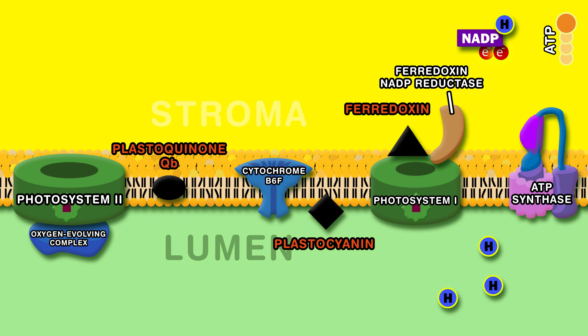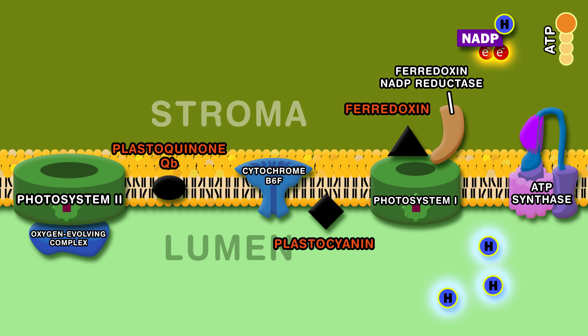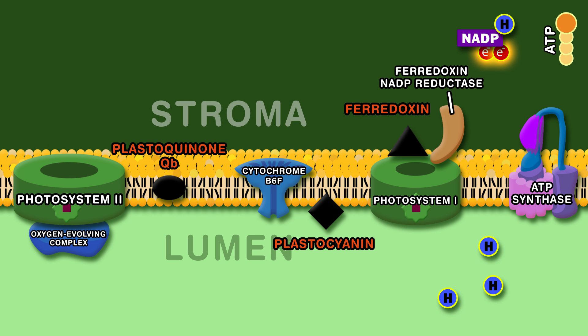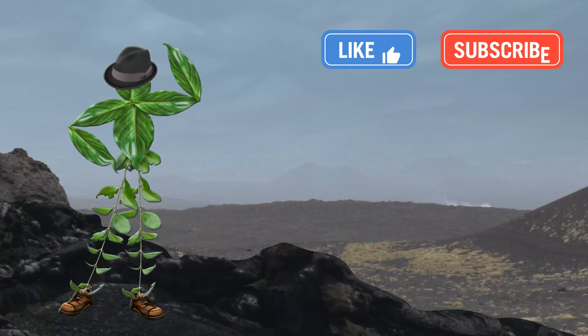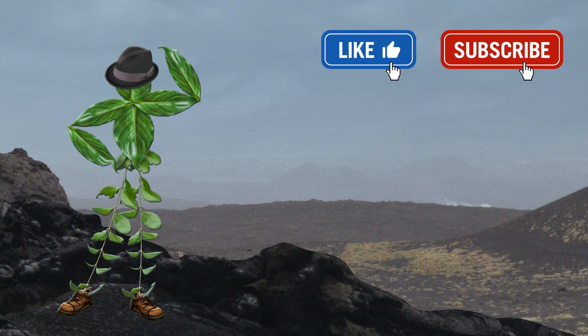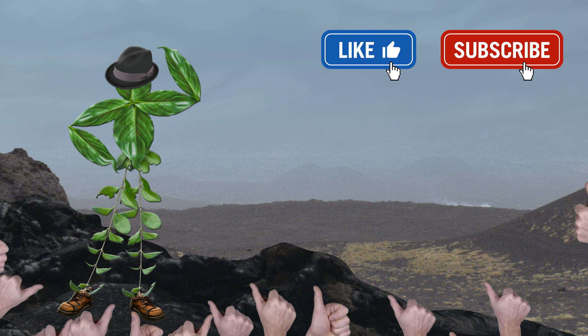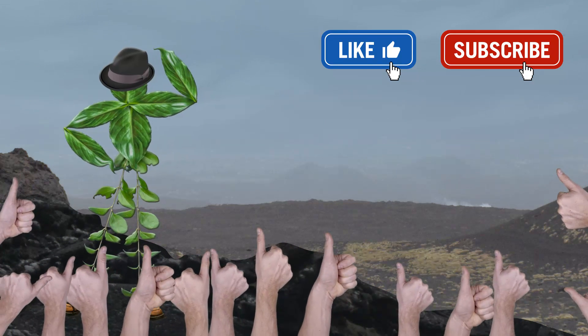ATP synthase lets the protons cross the membrane, harnessing their energy, which ATP now gains. From lumen to stroma the protons want to diffuse — when three pass through the complex, one ATP is produced by combining ADP and inorganic phosphate. Now on to the next song: light-independent reactions!